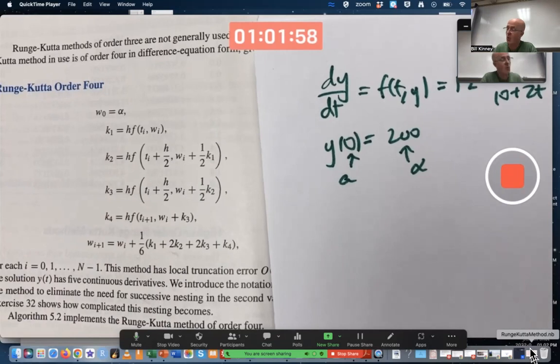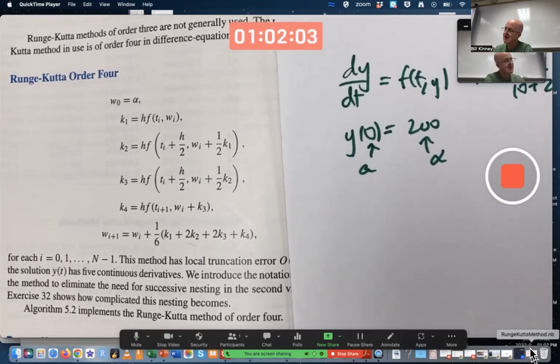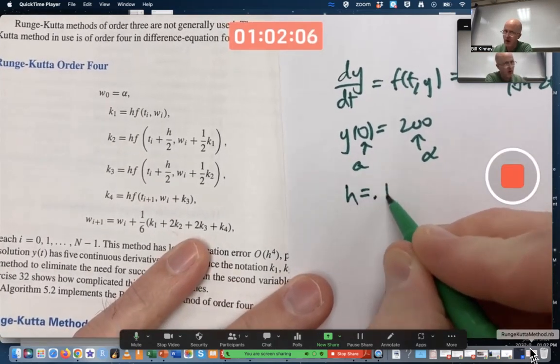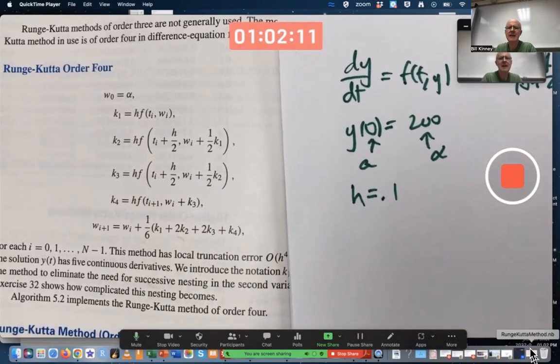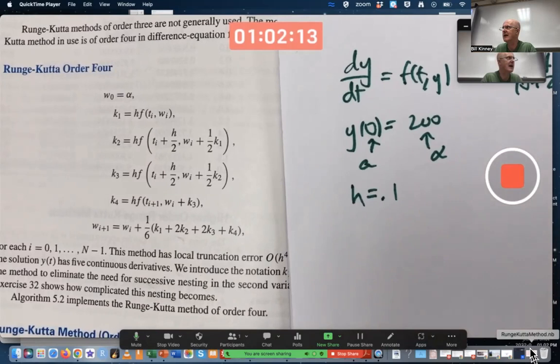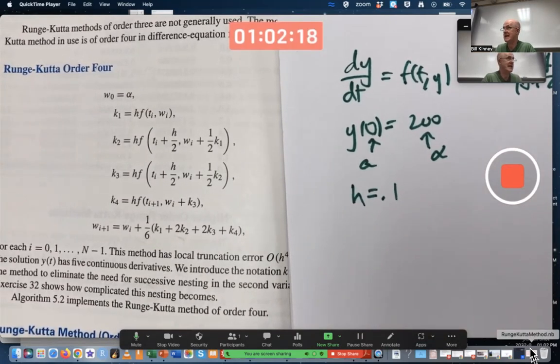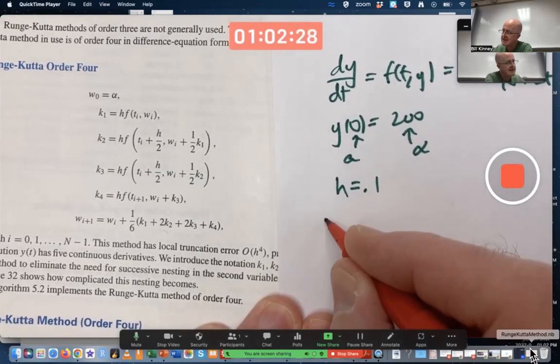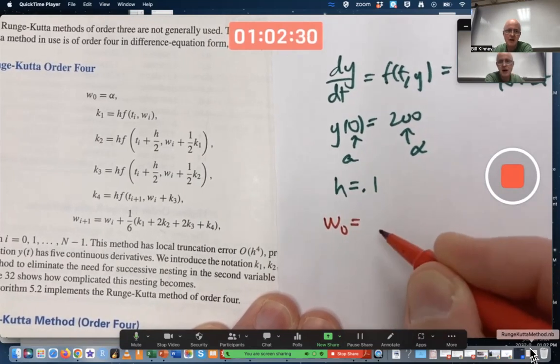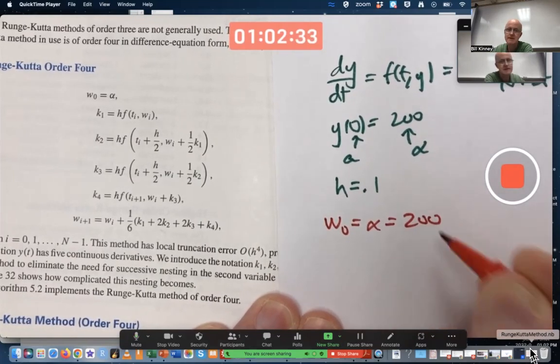But let's see if we can do one step of this by hand, going back to our old friends, say h is 0.1, and while we try to apply it, let's see if we can get a little intuition about what's going on. What's really going on with this method geometrically, instead of trying to use something like Taylor's theorem. So, according to this method, we start by letting W0 be alpha, 200 in this case.